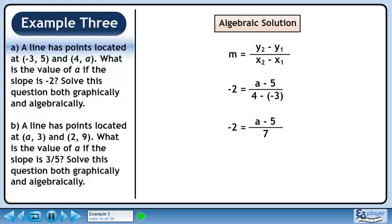Clean up the double signs. Cross multiply. The answer is a = -9. This is the same result we obtained solving this graphically.